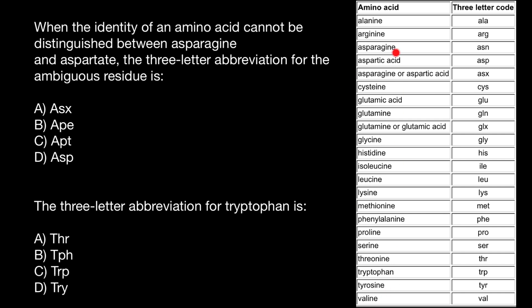All the amino acids in this table are represented in alphabetical order. We start with A: alanine's three-letter abbreviation is ALA; arginine is ARG; asparagine is ASN. You can see that this three-letter abbreviation is different from the first three letters of the name of this amino acid.